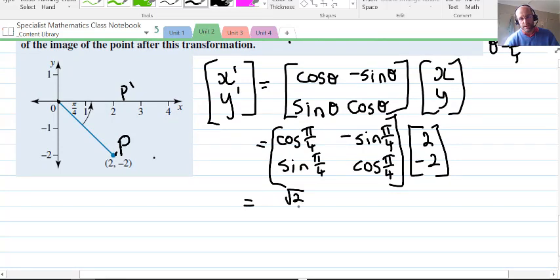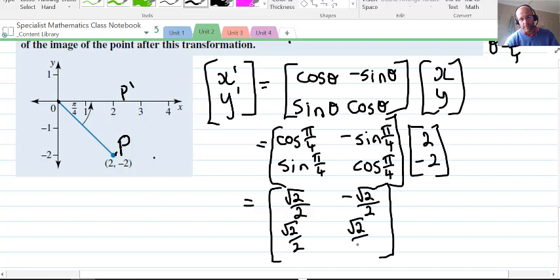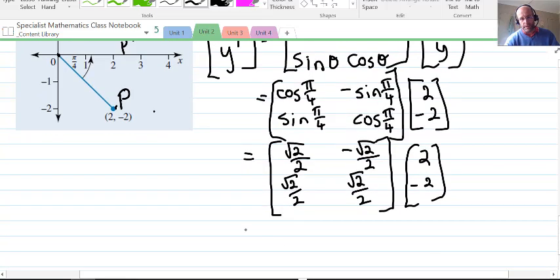Definitely easier here to use a rationalized denominator. You'll see if you use 1 over √2 for each of these, it would get you the right answer, but you'd have more working to do. So I'm going to put in the rationalized version.